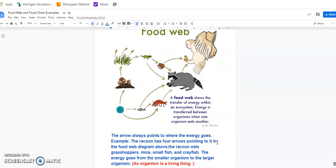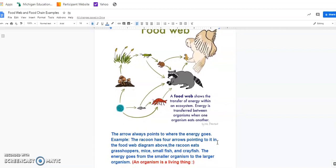Example, the raccoon has four arrows pointing to it in the food web diagram above. The raccoon eats grasshoppers, mice, small fish, and crayfish. So all four of those organisms would be eaten by the raccoon, giving it a broad array of nutrients.